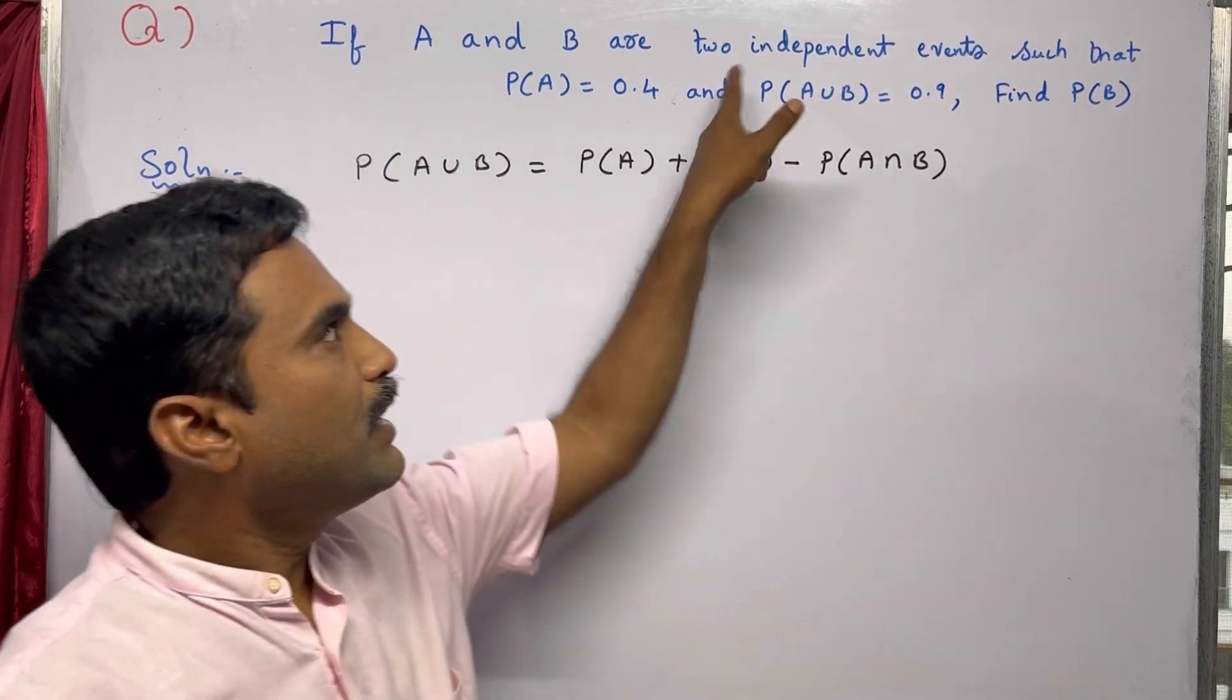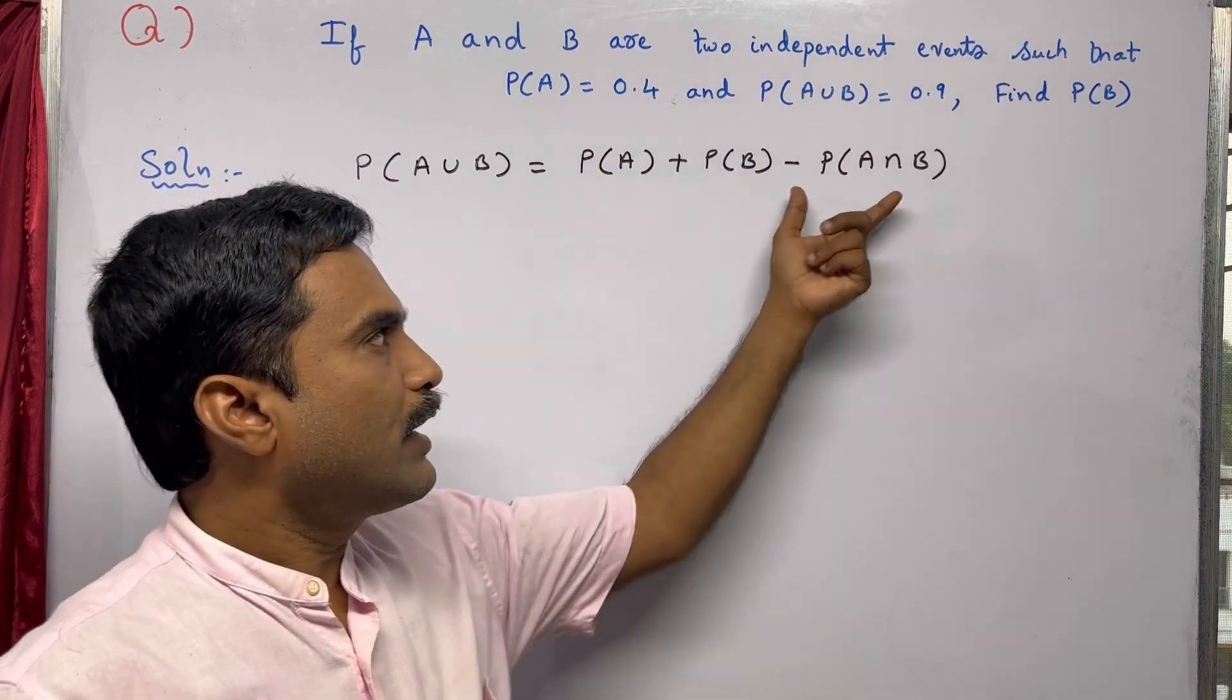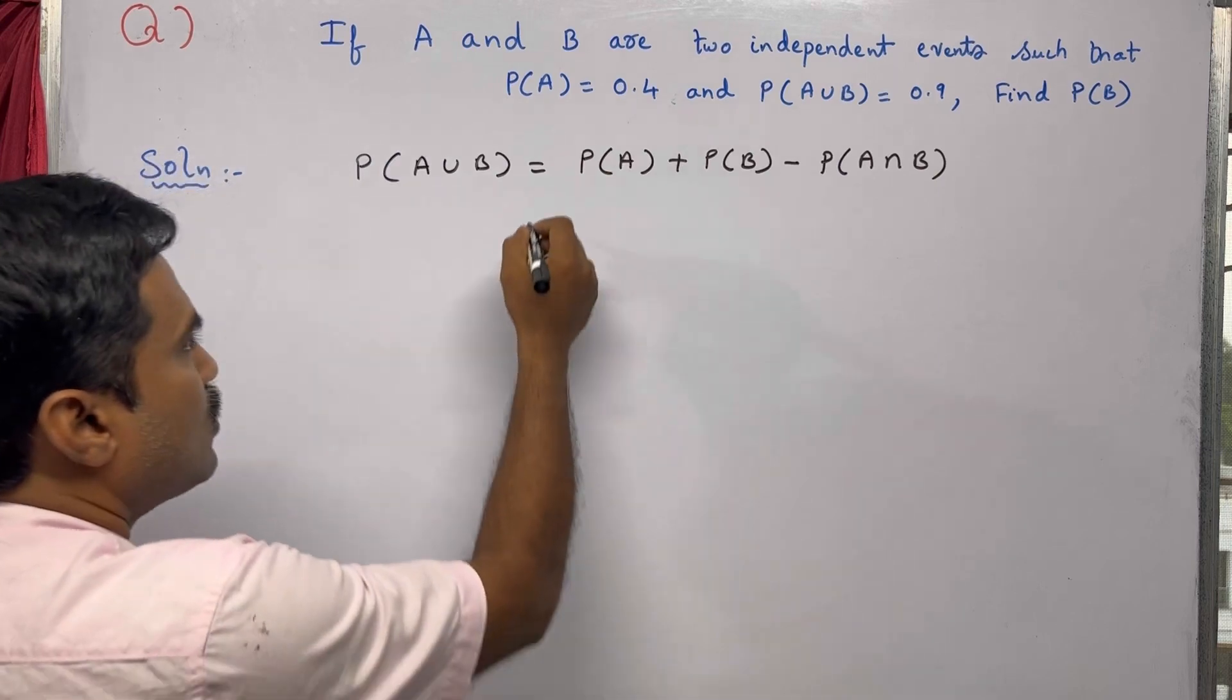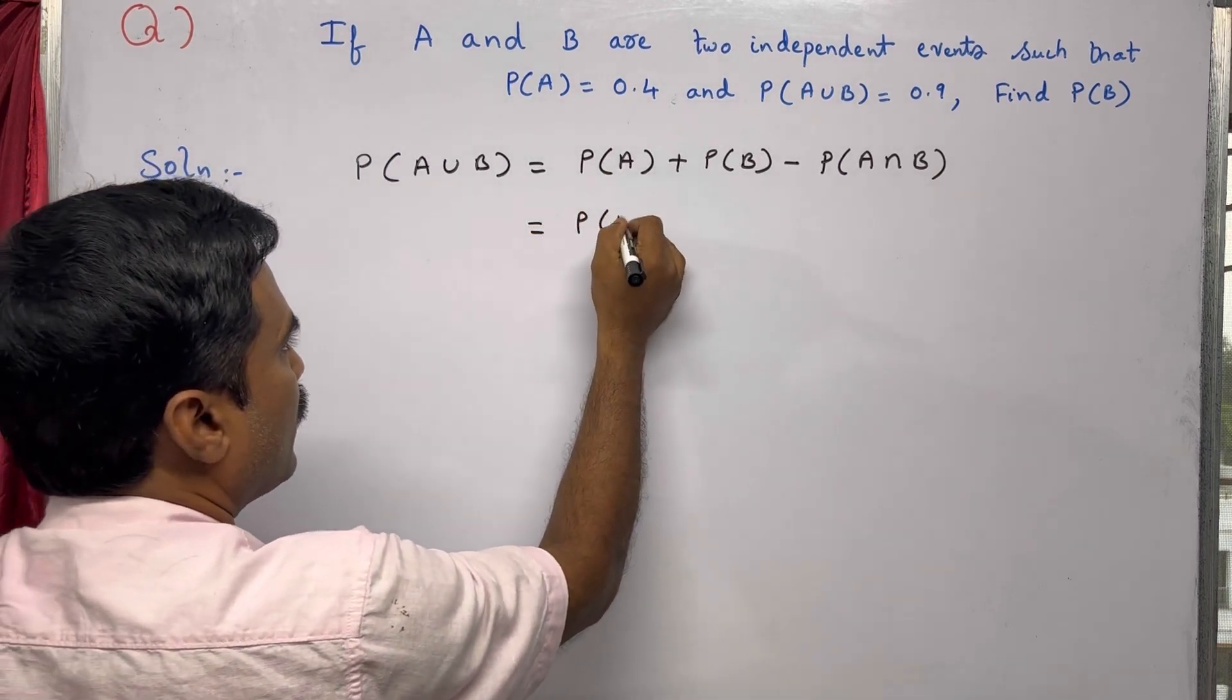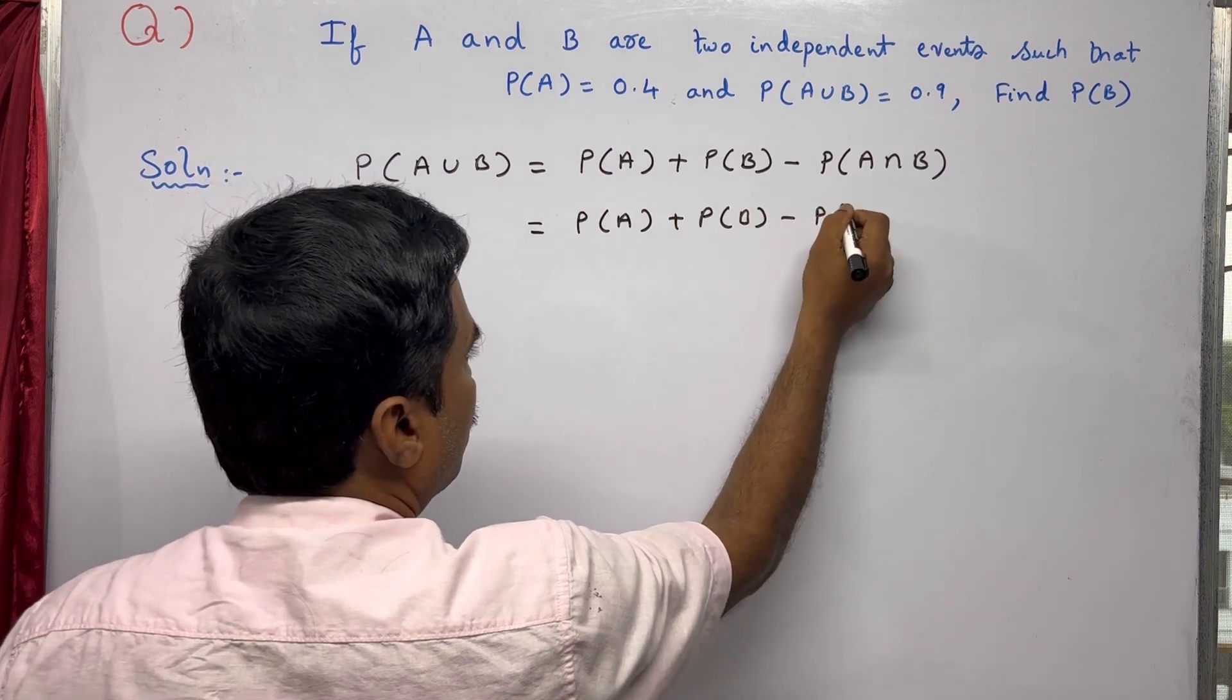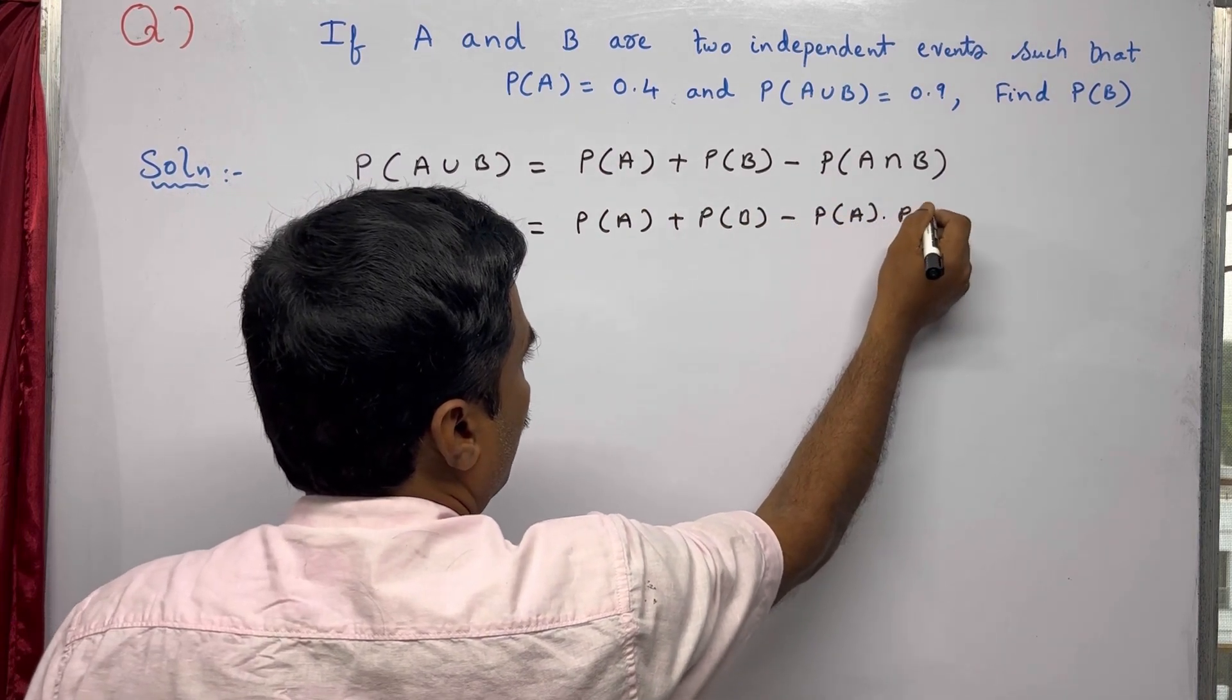Since A and B are independent events as given in the problem, we can write P(A∩B) as P(A) times P(B). So you can write this as P(A) plus P(B) minus P(A) times P(B).